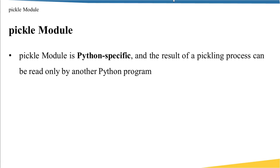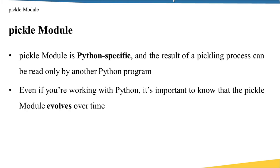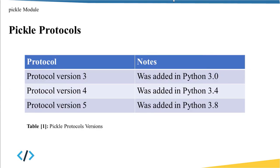Pickle is Python-specific, meaning the result of a pickling process can only be read by another Python program. If you pickle data using the pickle module, you must also un-pickle it using pickle — not another programming language. Additionally, pickle evolves over time, so data pickled with Python 3.6 may not be un-picklable in Python 3.0. Currently, pickle protocol version 3 was added in Python 3.0, version 4 in Python 3.4, and version 5 in Python 3.8.